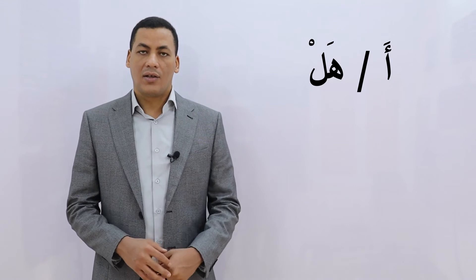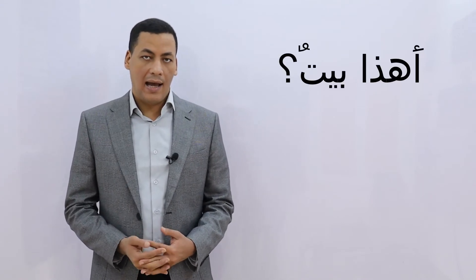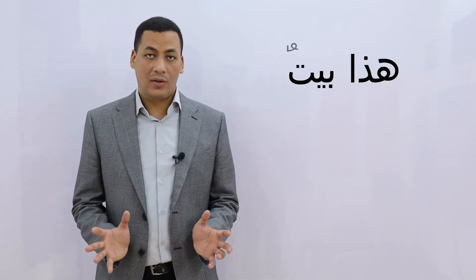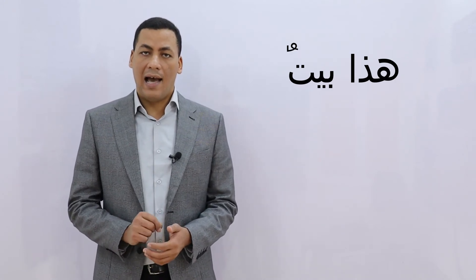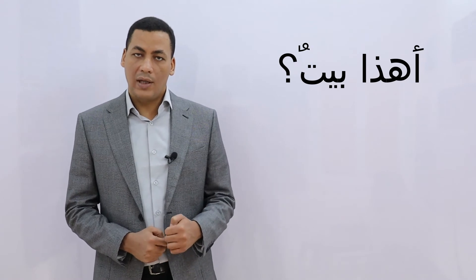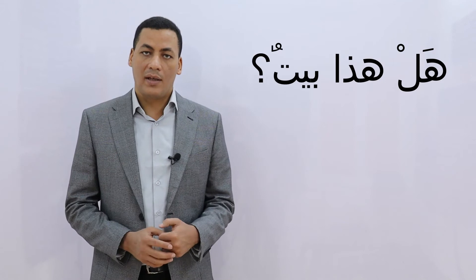In Arabic, if you want to form a question like 'is this a house?', we just add an article. The sentence we studied before — 'this is a house' — we just add the article 'hal', and the sentence becomes 'hal haza baytun?', meaning 'is this a house?' This is how we form that type of yes/no question.